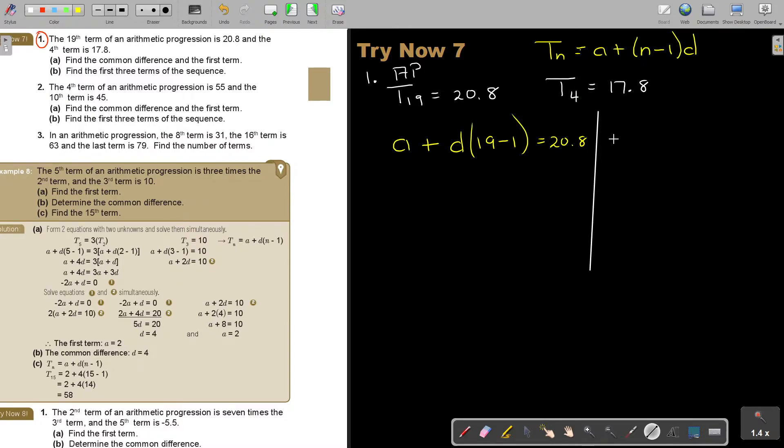Again, I'm going to say A, and it's D. And now it's 4 minus 1. And then it's 17.8.